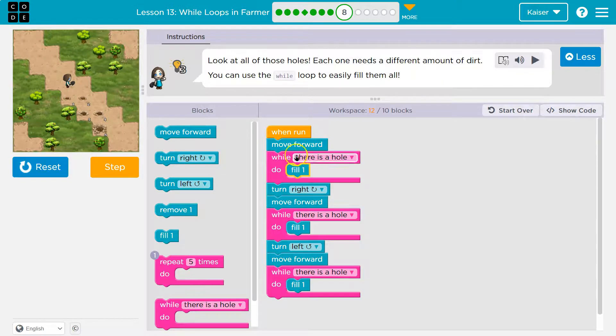So this while is now false. This is a false statement. So I should drop below and turn right. Boom. Now I'll keep going. Same deal. Hey, is there a hole? Yep. So I fill it once. Hit the bottom back to the top. Is there a hole? False. So I then I'm going to turn left.